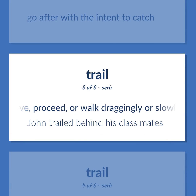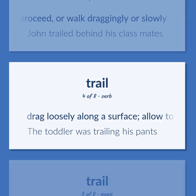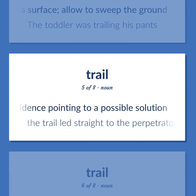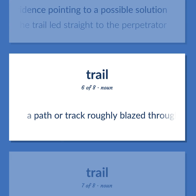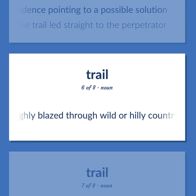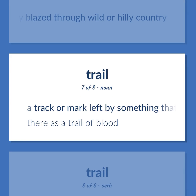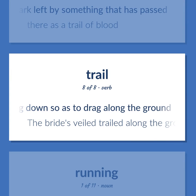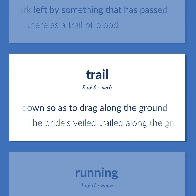Trail (verb): Move, proceed, or walk draggingly or slowly — John trailed behind his classmates. Drag loosely along a surface; allow to sweep the ground — the toddler was trailing his pants. Evidence pointing to a possible solution — the trail led straight to the perpetrator. A path or track roughly blazed through wild or hilly country. A track or mark left by something that has passed — there is a trail of blood. Hang down so as to drag along the ground — the bride's veil trailed along the ground.